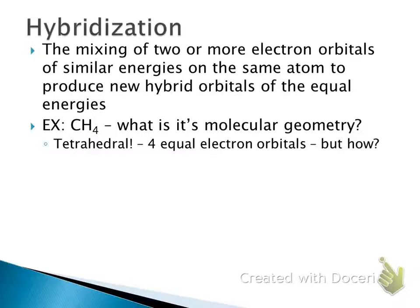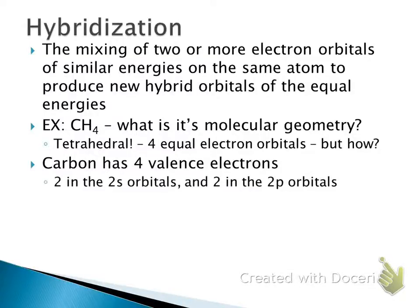But how is that possible? Carbon is in the 2p block — second row, p block. Hydrogen is in the 1s orbital. They're on different levels with different shapes. Carbon has four valence electrons available: two are in the 2s orbitals and two are in the 2p orbitals. All of those valence electrons are in the second level. So carbon has four to give — two in the 2s orbital and two in the p orbitals.